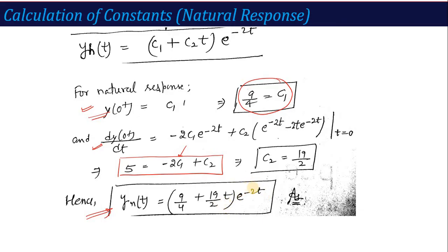The natural response is y_n(t) = (9/4 + (19/2)t)·e^(−2t). This is how we solve the natural response — the same approach as the last question, but with a different equation chosen so you better understand the method.